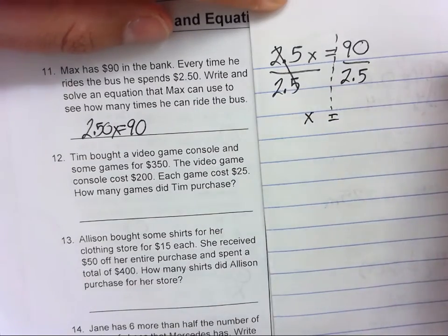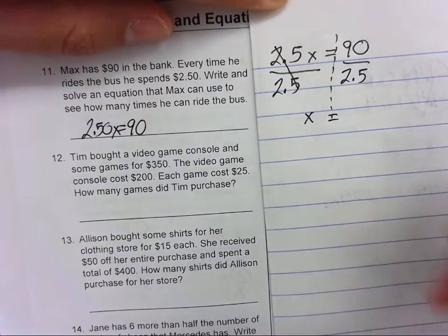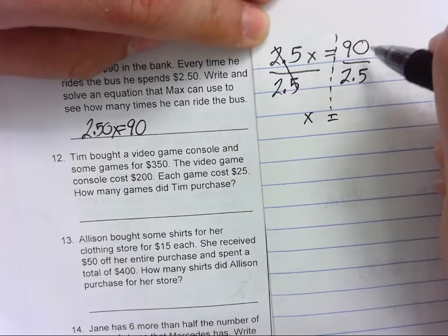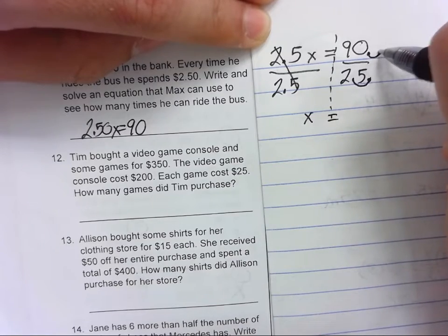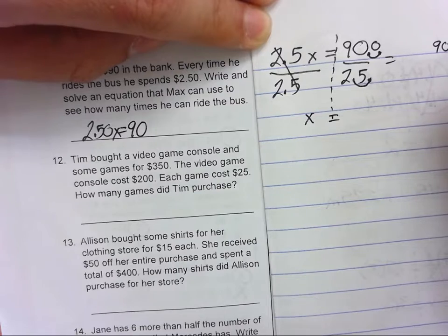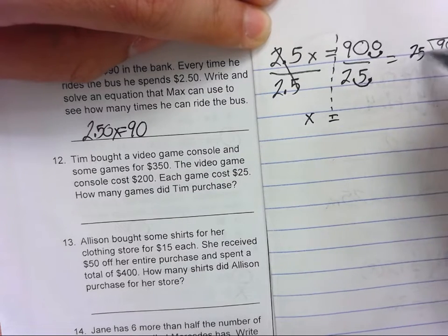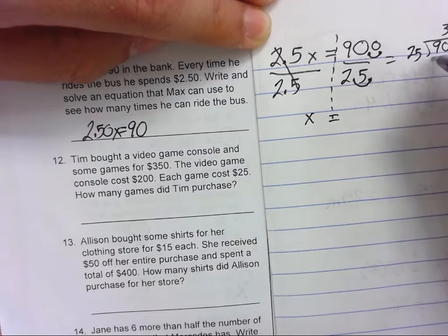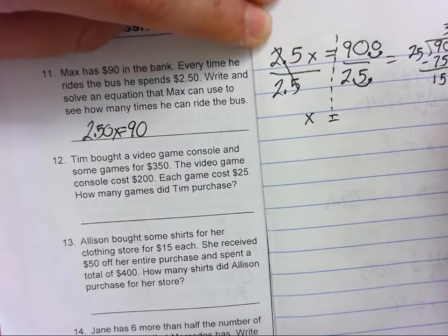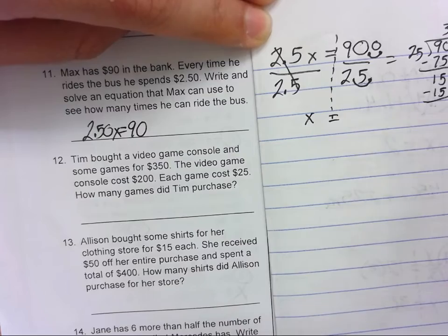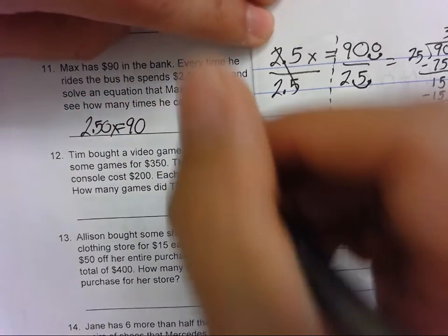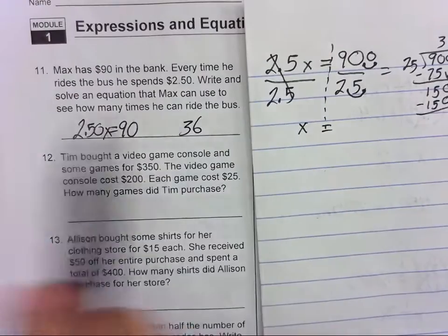x equals—now you could solve this any way you wanted. Two and a half divide 90 by two and a half. I'd probably make this 25 and make this 900, so 900 divided by 25. 25 goes into 93 times, 75, minus and get 15, bring down the zero. And 25 goes into 150 six times. 25 times 6 is 150. So how many times can you ride the bus? 36.